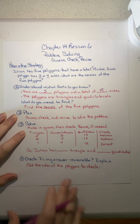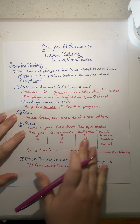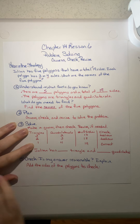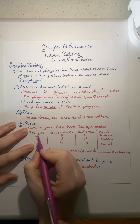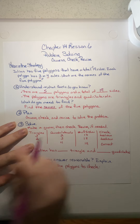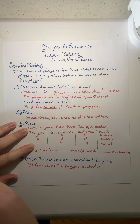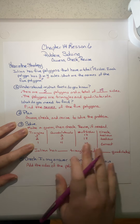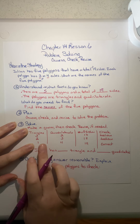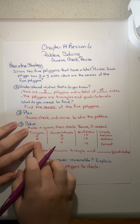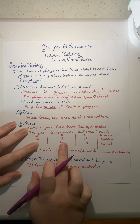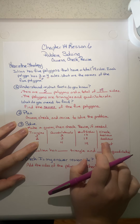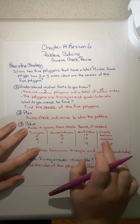Our plan is to guess, check, and revise to solve the problem. We made a guess, then check, and we're going to revise if needed. We made a table here. We tried three triangles and two quadrilaterals — that ended up being 17 sides, so it's too small. We tried two triangles with three quadrilaterals — that ended up being 18 sides, so that's also too small.